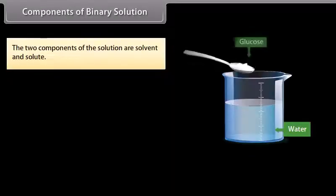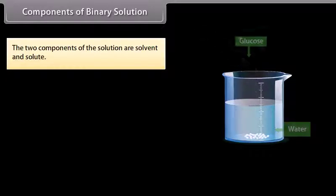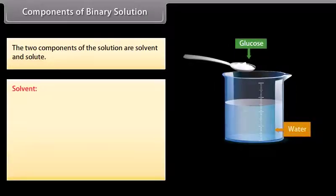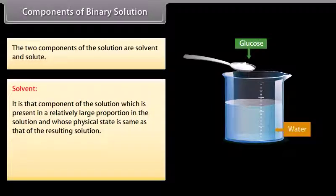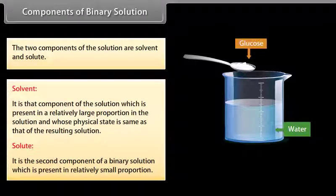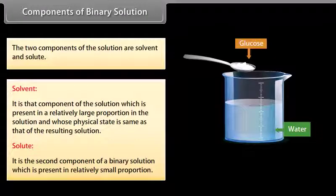The two components of the solution are solvent and solute. Solvent is that component of the solution which is present in a relatively large proportion in the solution and whose physical state is same as that of the resulting solution. Solute is the second component of a binary solution which is present in relatively small proportion.